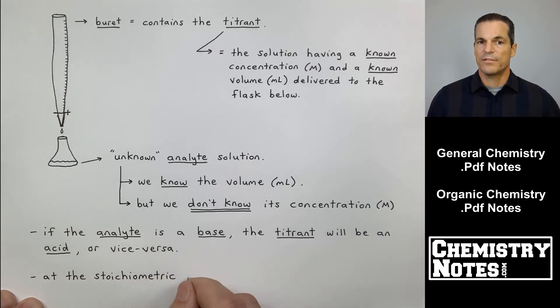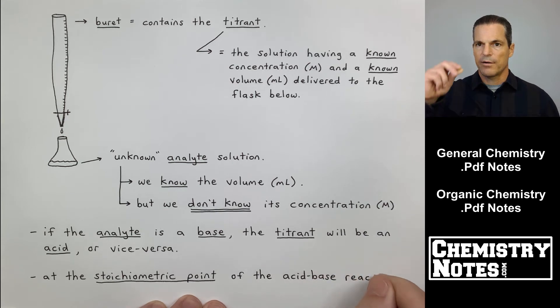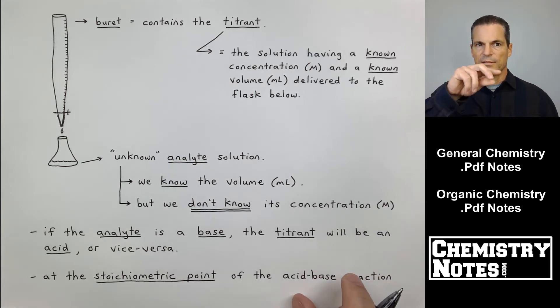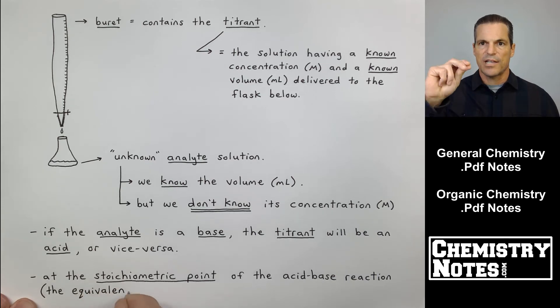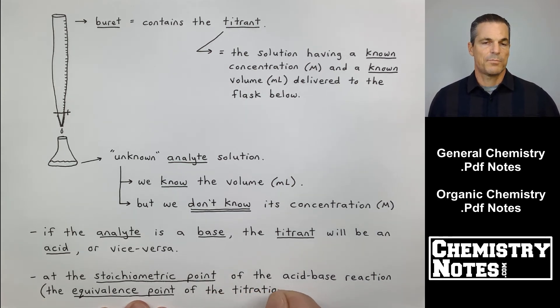Now, at the stoichiometric point of the acid-base reaction that I'm controlling, I'm controlling down there, that little valve thing at the bottom of the burette is called a stopcock. It's just how I deliver acid or base. At the stoichiometric point of the acid-base reaction, which is the same thing as the equivalence point of the titration.